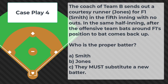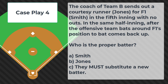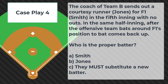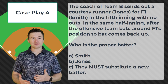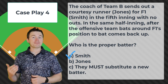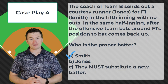Case play number four: the coach of team B sends out a courtesy runner Jones for F1 Smith in the fifth inning with no outs. In the same half inning, after the offensive team bats around, F1's position in the batting order comes back up. Who is the proper batter — Smith, Jones, or must they substitute a new batter? The correct answer is Smith. Since Smith is in the lineup, Smith will be the proper batter when their position comes back around.